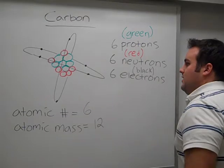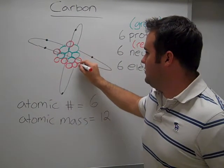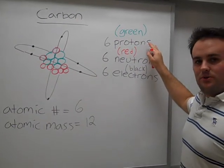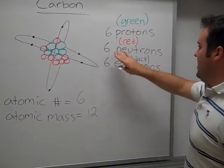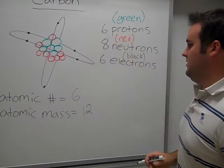I'm going to grab a red marker and add in two more neutrons to the nucleus. Now we have six protons in the nucleus, but now we have eight neutrons in the nucleus.